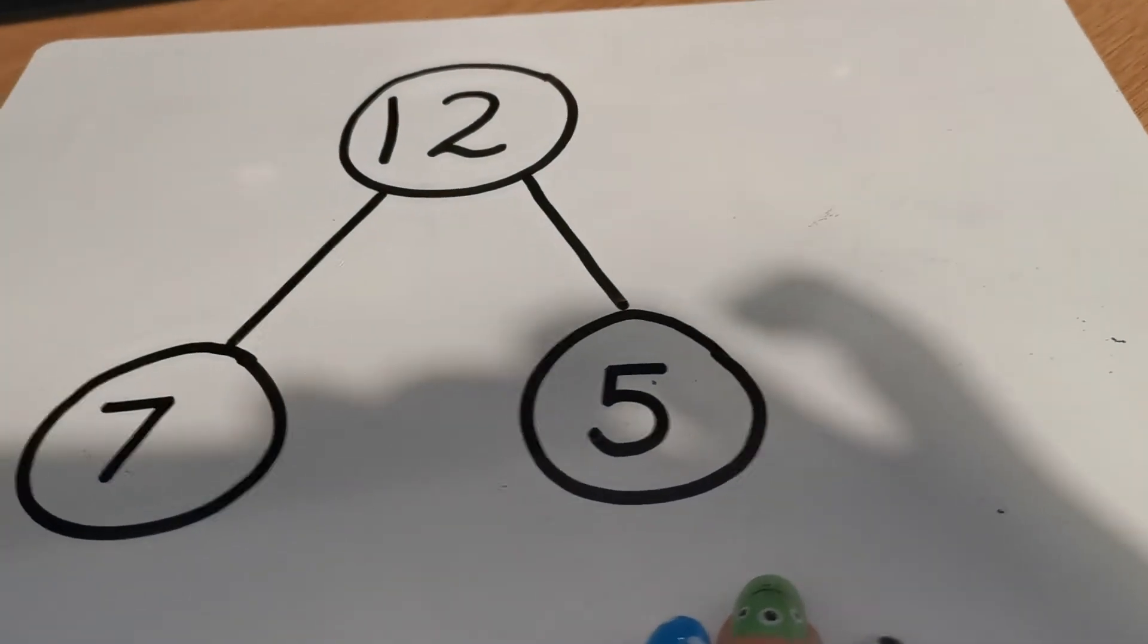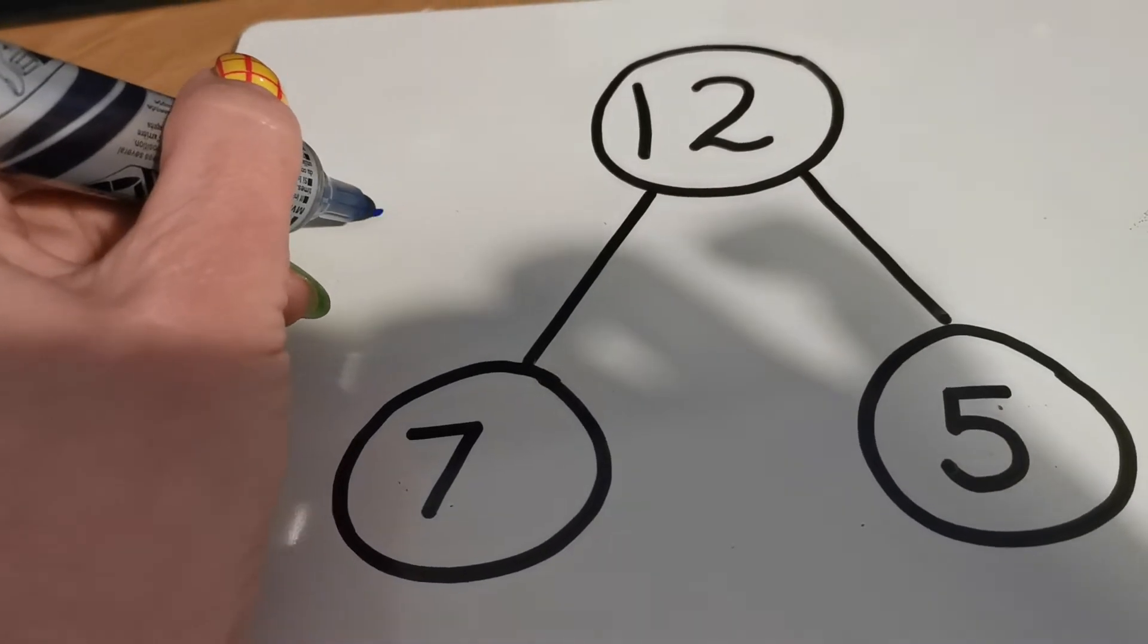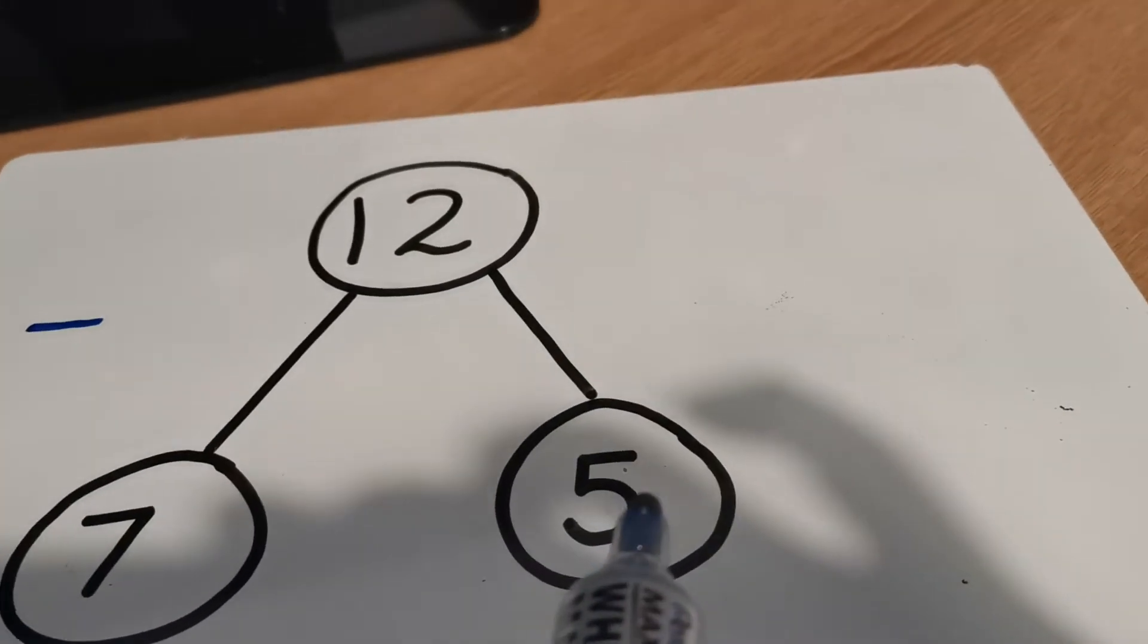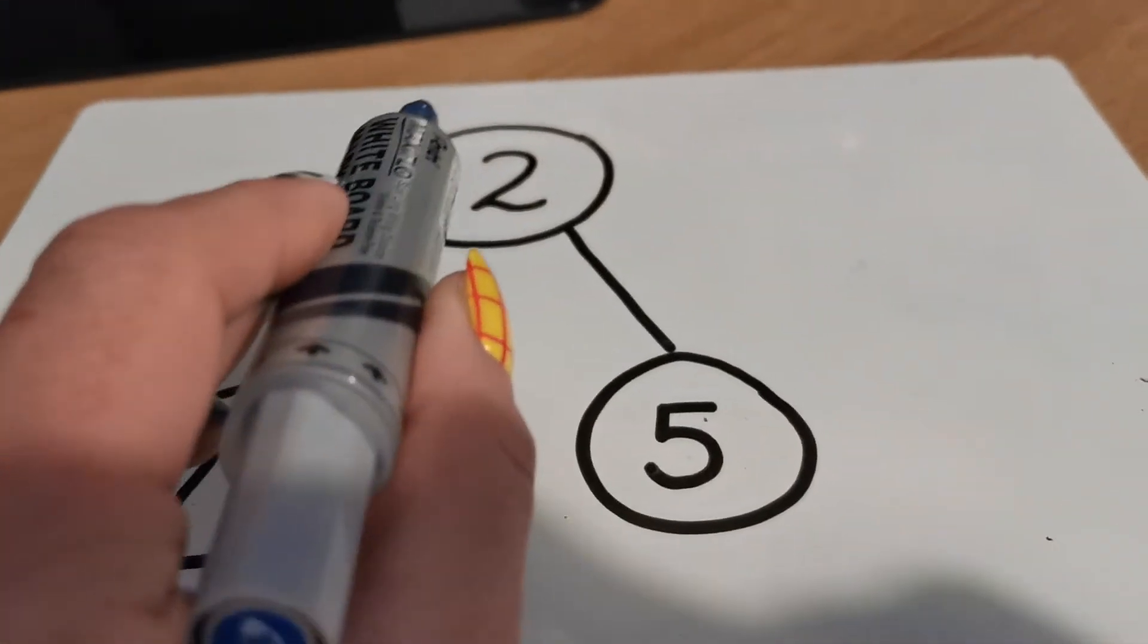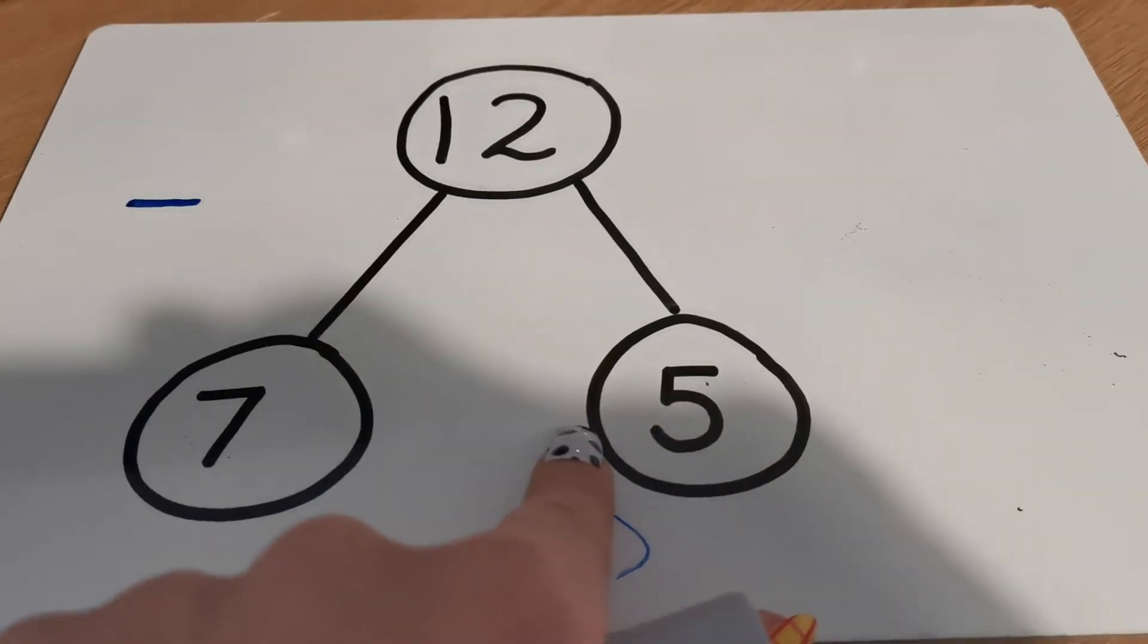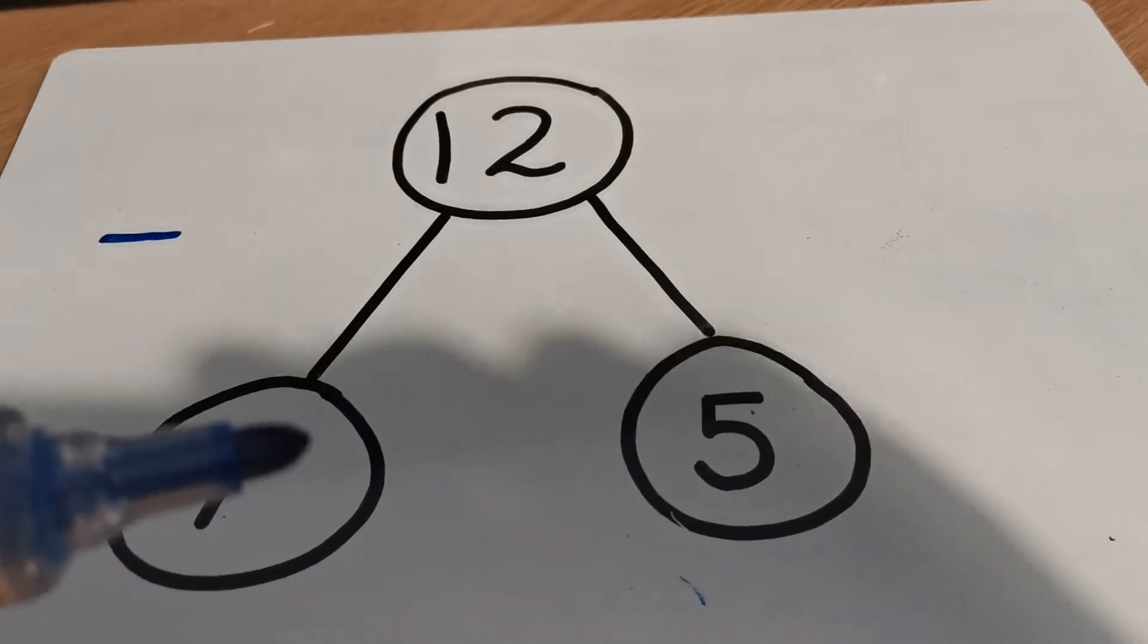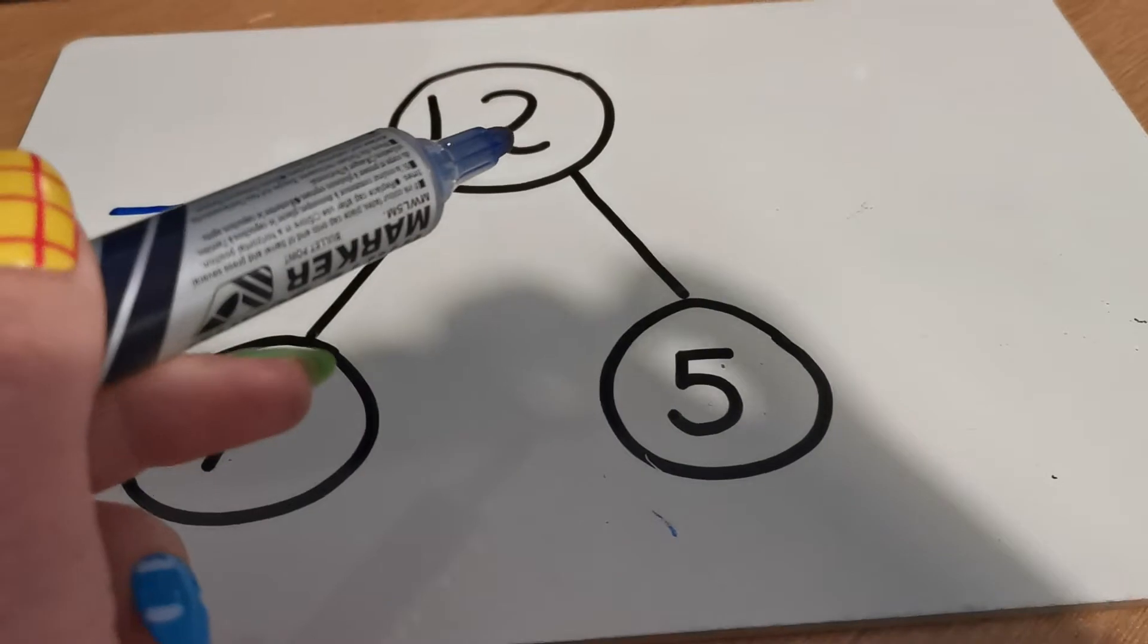Now the difference is with a takeaway or a subtraction—remember the sign for subtract or take away looks like that—the difference is we always have to start with the whole. We can't start with a part and take away a bigger number. We've always got to start with the greatest number, which is the whole.